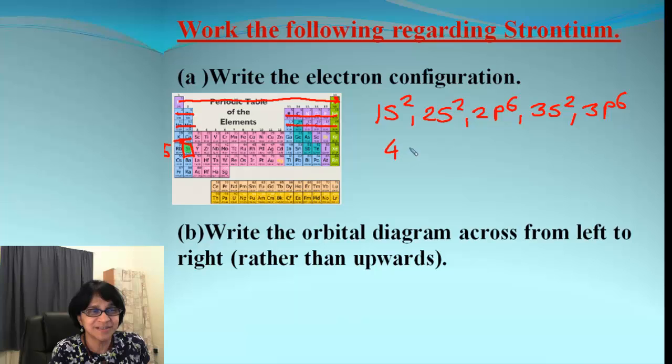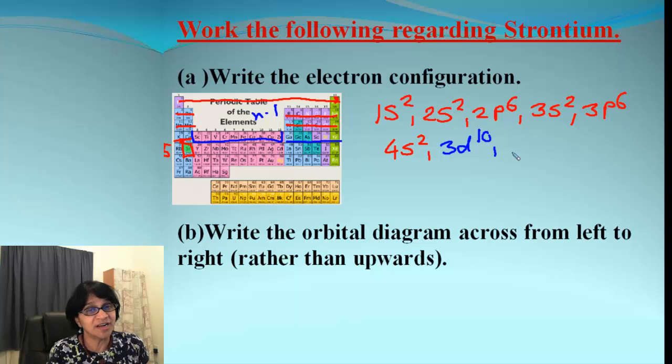Then we go to 4s, completely filled in again. And now, be careful what we have here. We enter into the d block. For d block, we go one level lower n minus 1. So, even though it is fourth period, we are going to go one level below which will be 3d. And our strontium is way still far away. It's in fifth row, fifth period. So, we are going to make sure that d orbital is completely filled in. So, 3d has 10 electrons. Then, we go to the p orbital. P orbital, we again come up because that keeps the same principal quantum number. So, we end up getting 4p and that's completely filled in. So, it's 4p⁶.